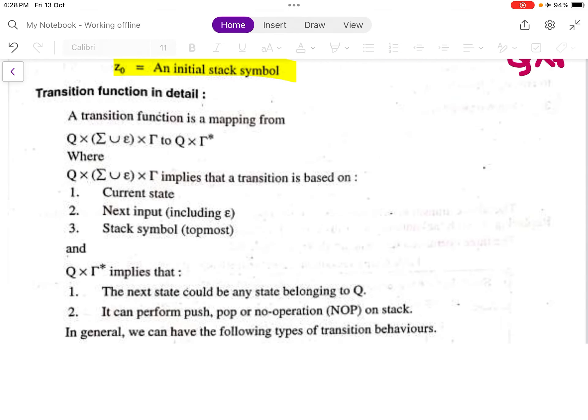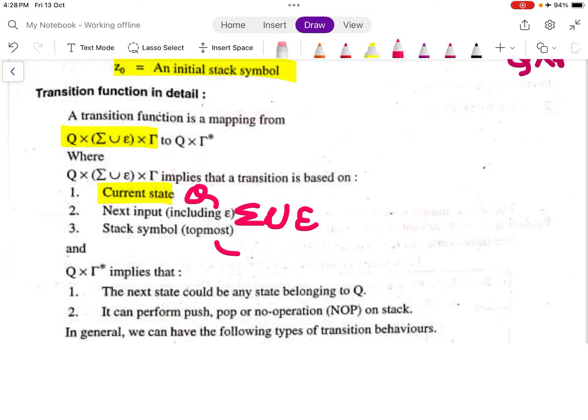Transition function in detail: a transition function is a mapping from Q × (Σ ∪ ε) × Γ, which implies that a transition is based on the current state, the next input including epsilon, and the stack symbol.